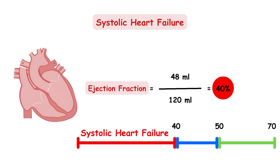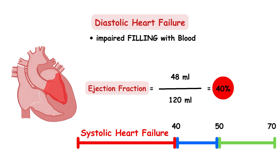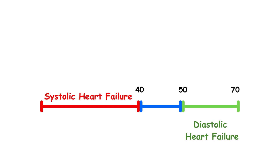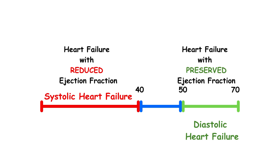In individuals with diastolic dysfunction, the ejection fraction of the ventricle is normal. The impaired relaxation of the ventricle leads to impaired filling with blood, meaning the total volume received by the left ventricle is reduced. For example, if the ventricle received 80 milliliters and pumped 48 milliliters, the ejection fraction will be 60%, which is in the normal range. From everything explained so far, we can distinguish heart failure with reduced ejection fraction — previously known as systolic heart failure — and heart failure with preserved ejection fraction — previously known as diastolic heart failure.